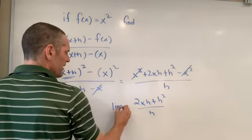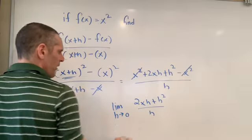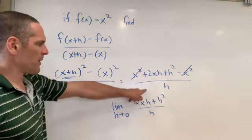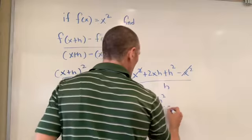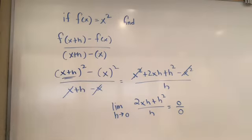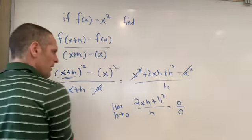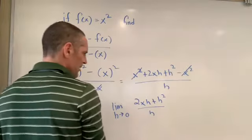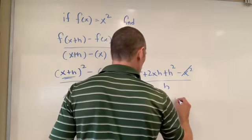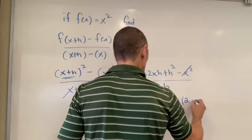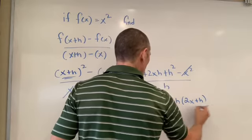x squared cancels with x squared, and I'm left with 2xh plus h squared over h. Now, if I'm asked to take the limit as h approaches 0 of this function, notice what happens if I substitute in 0 for h. I get 0 over 0, which we know is an indeterminate form. So, I must have to do something special. Our plan B: Factor out an h, and we're left with 2x plus h over h.